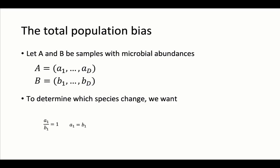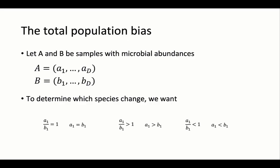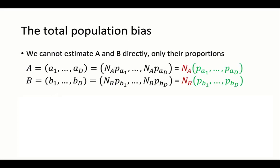If this ratio is equal to 1, that implies the microbial abundance is not different between the two environments. If this ratio is greater than 1, that implies the microbial abundance is greater in environment A compared to environment B, and vice versa if the ratio is less than 1. But remember, we often cannot directly observe the microbial abundances in the environment—instead, we need to sample from it. From these samples, we can estimate the proportions of the microbes, and we can separate the proportions we can measure from the total microbial biomass we cannot observe.